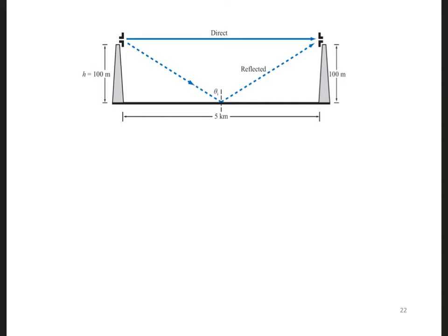The receiver now receives signals from two different directions, so we need to calculate the total received electric field, E_total, which is equal to E_direct plus E_reflected.